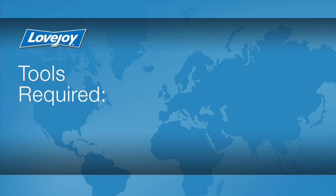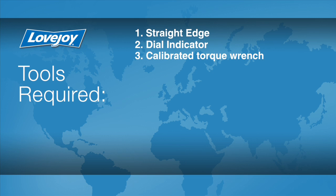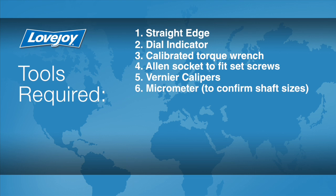Let's look at the necessary tools we will need to perform this installation. A straight edge, a dial indicator, a calibrated torque wrench, Allen socket to fit the set screws, Vernier calipers, a micrometer to measure the shaft diameter.